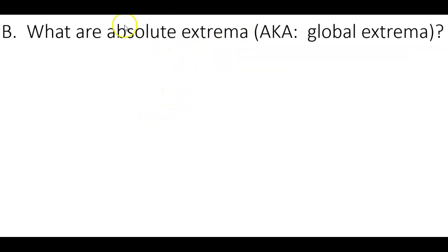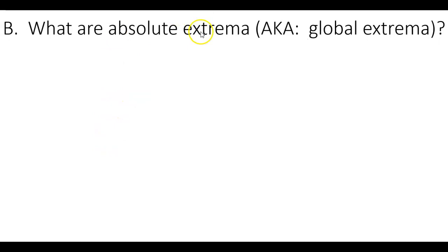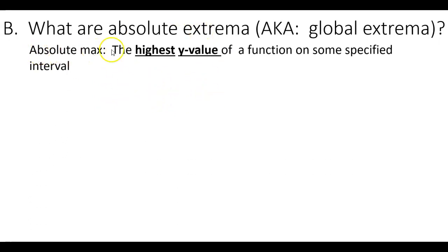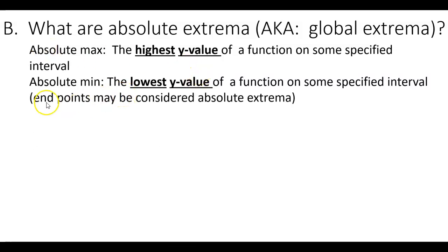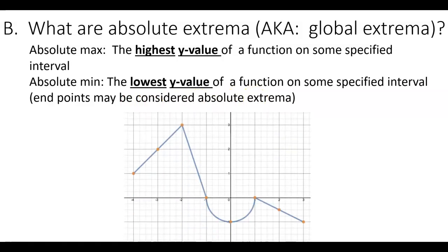Absolute extrema are also known as global extrema — just be aware those are synonyms. The absolute max is the highest y value of a function on some specified interval, whereas the absolute minimum is the lowest y value on some specified interval. One important note: endpoints can be considered as absolute extrema. Let's bring this to life with an example — which point on this graph is the highest?